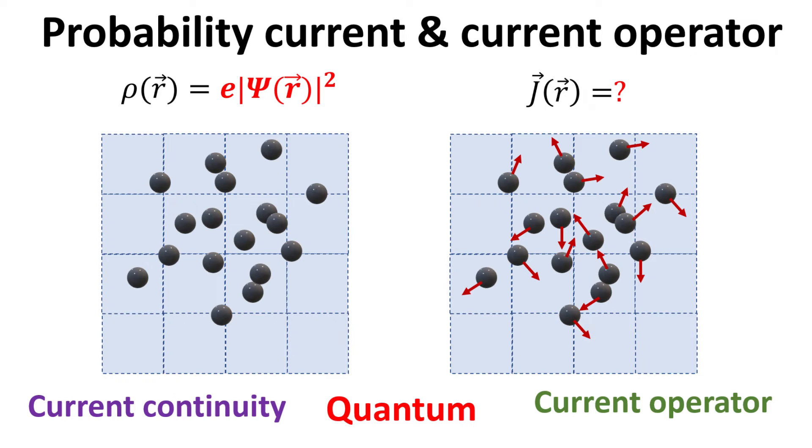We will derive an explicit mathematical form of the probability current from the current continuity equation, and subsequently, an expression of the current operator. We will conclude with some examples.